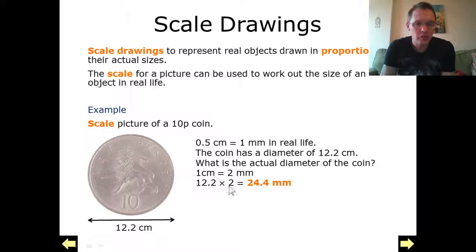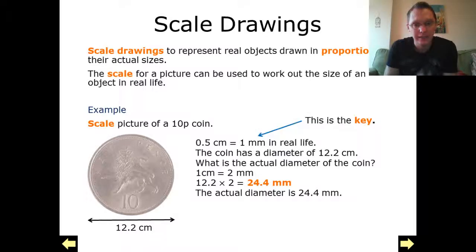12.2 times that by 2, because centimetres, turning it into millimetres, times it by 2, will give me 24.4 mm. And that is the diameter of a 10p coin. And of course, this would become a key.